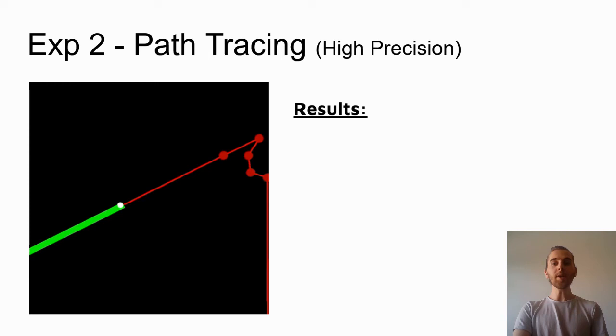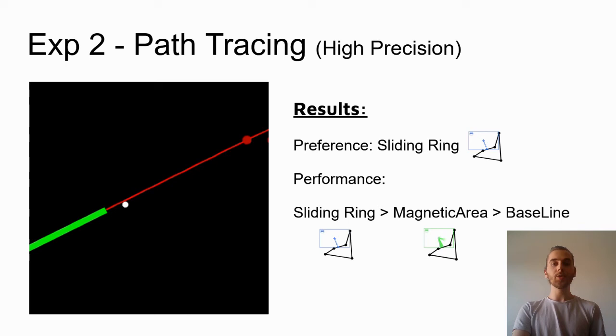For the high precision path tracing task, where participants had to trace the links, sliding ring is preferred by the user for this task. But also, sliding ring exhibits better performance, and after comes magnetic area, and then baseline.